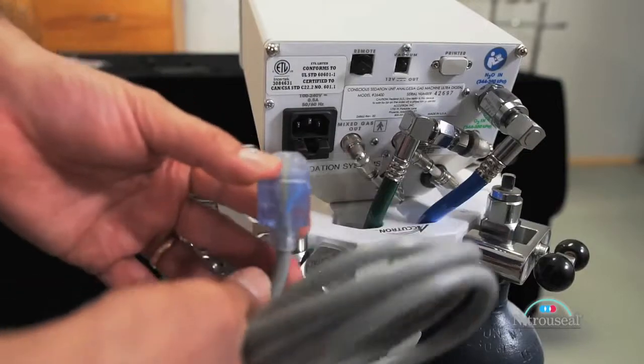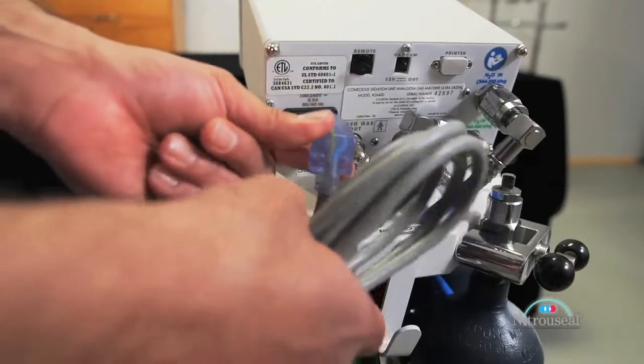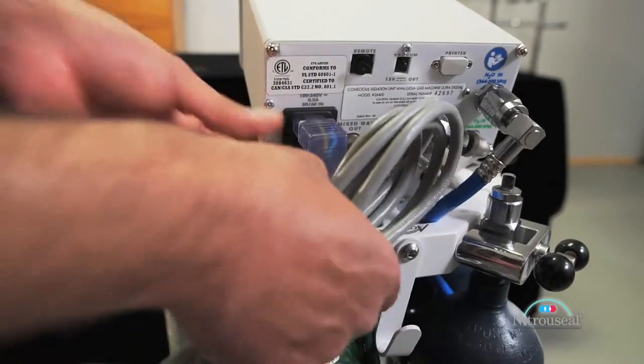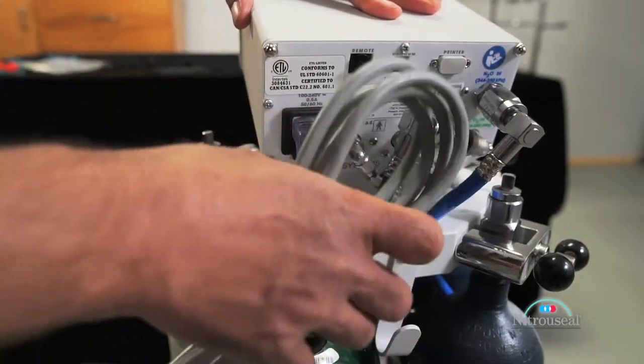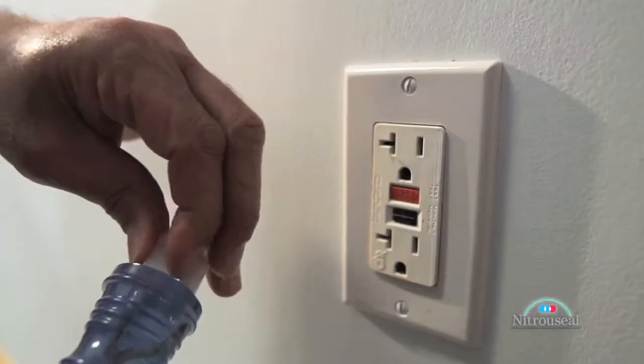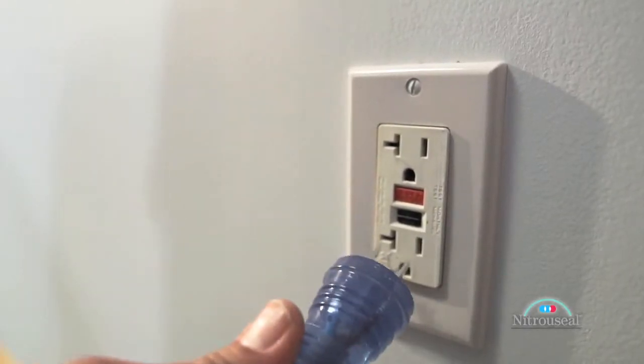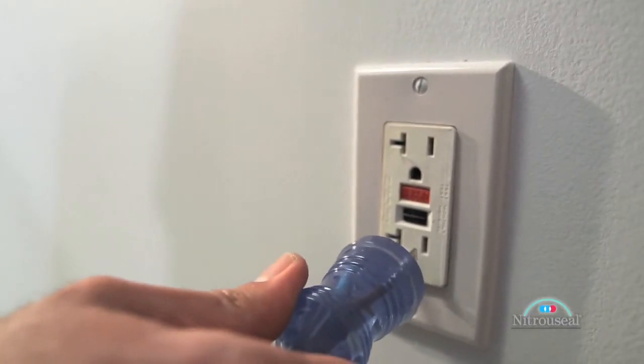Now connect the electrical power cord to its corresponding socket on the rear panel of the flow meter. Then plug the electrical power cord into a conveniently located wall outlet receptacle.